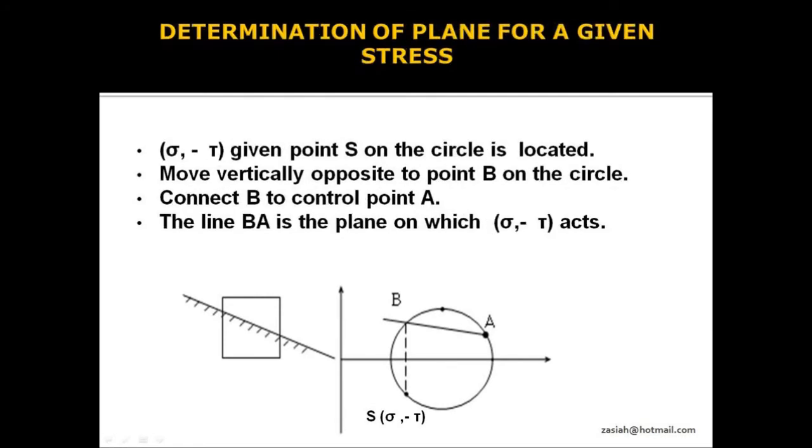On the other hand, if we want to determine the plane whose stresses are given, we have to just point out the point S for those stresses on Mohr's circle, then move vertically opposite and get the point B on Mohr's circle, then add a line from B to A. Here the drawn plane AB is the plane for those given stresses.